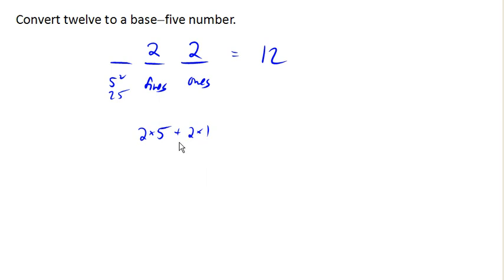Right? So 2 5s is 10, 2 1s is 2, and that would give us 12. Okay? So the number 2 2 base 5 is equal to 12 in base 10.